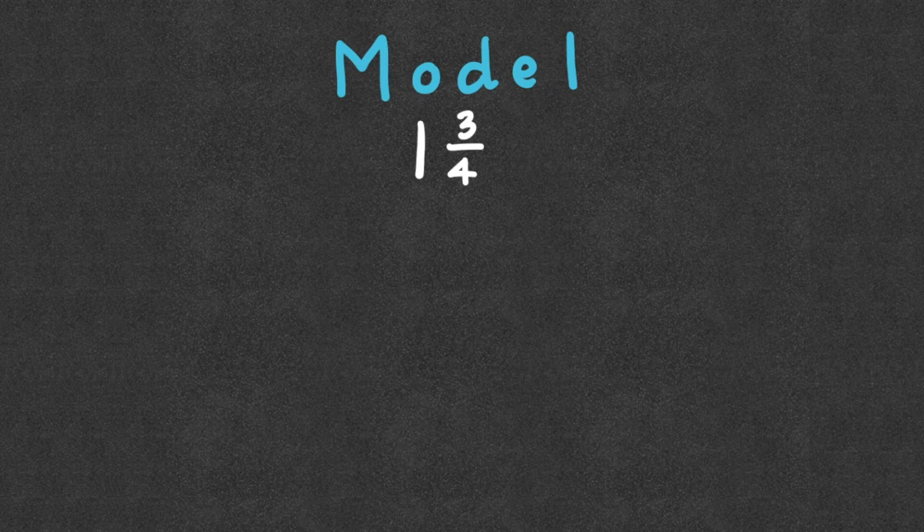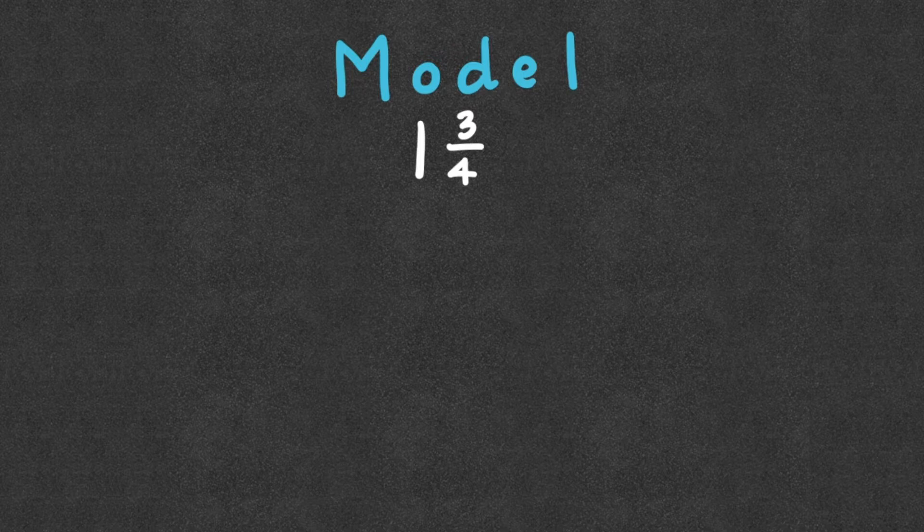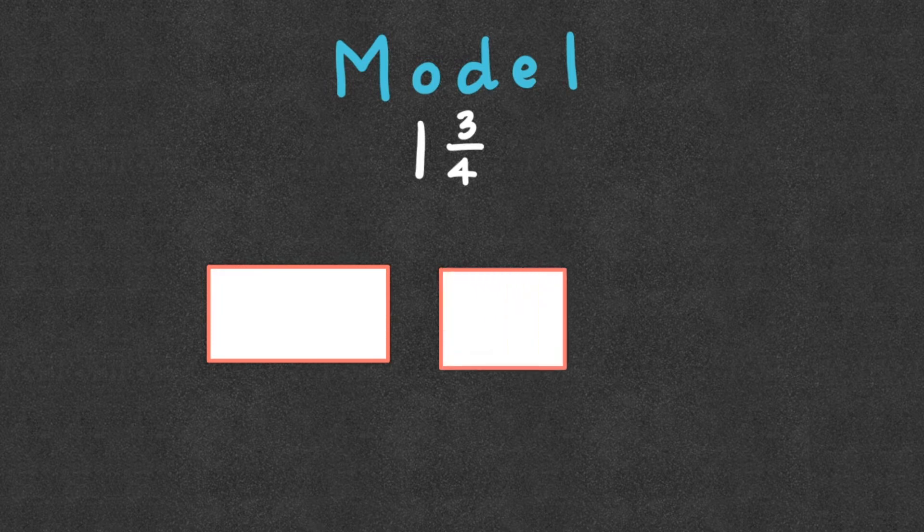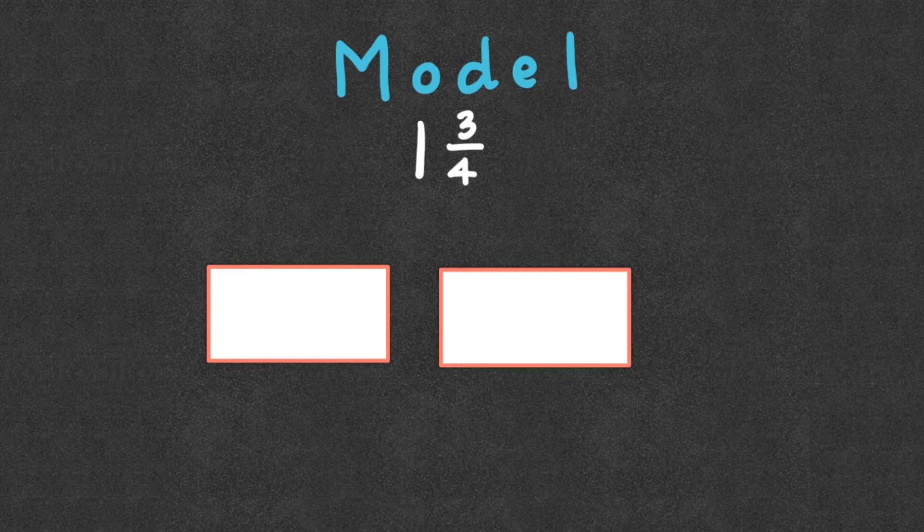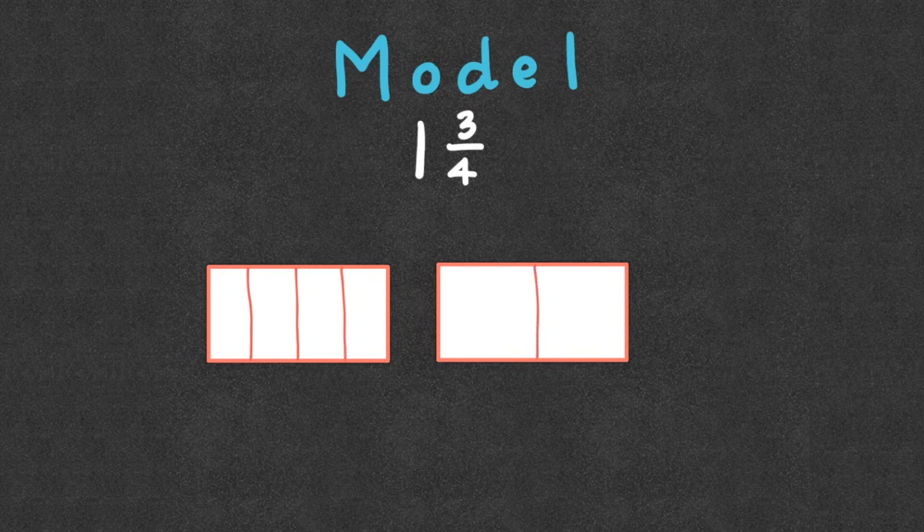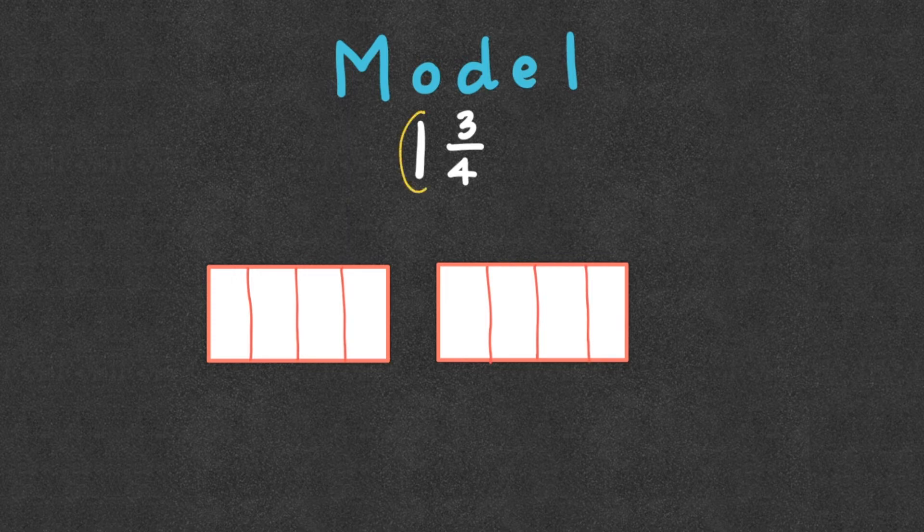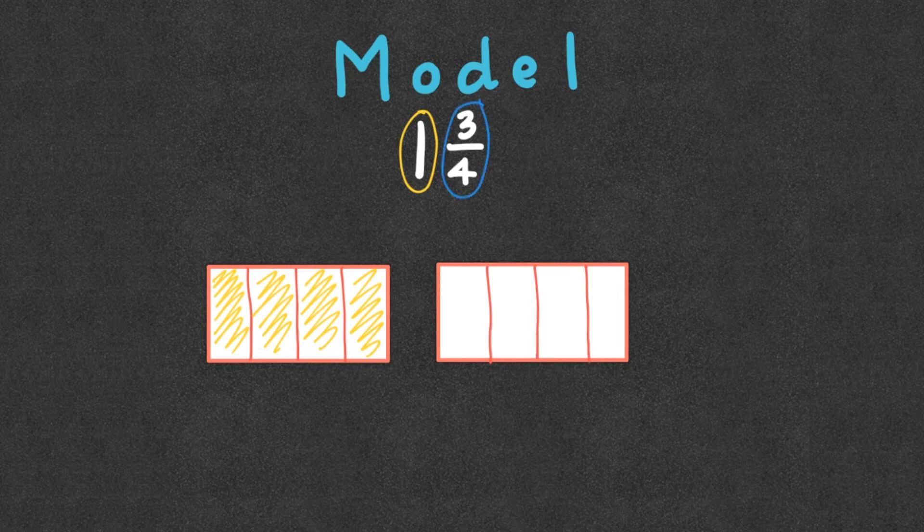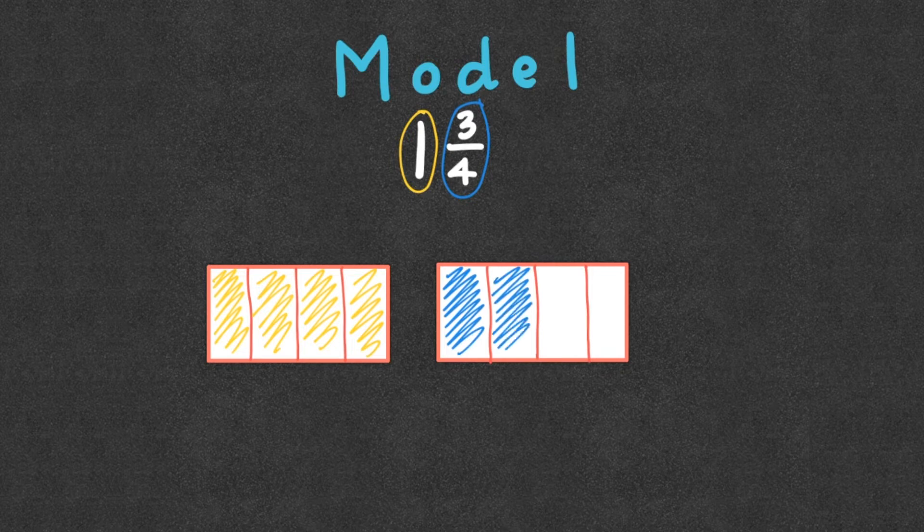So if we looked at 1 and 3 fourths, I do want to show you what this actually means, how we can look at this. So say we have one whole, and I know that the 3 fourths is going to come from another one because we have more than one. Our denominator tells us that there's 4 pieces in each. So I'm going to fill in these with 4. So now this one whole tells us that one whole of these is filled in. And this 3 fourths tells us that we have 3 out of 4 filled in.